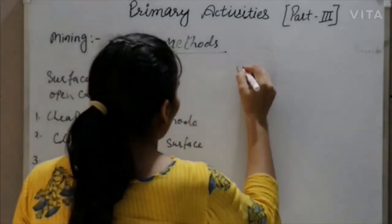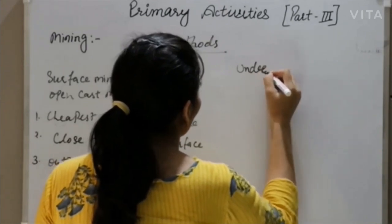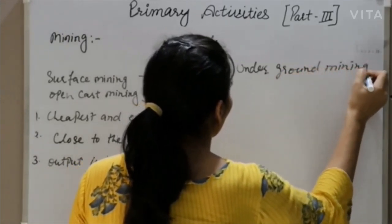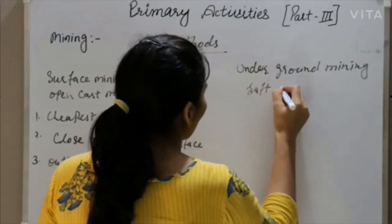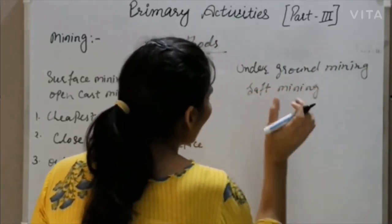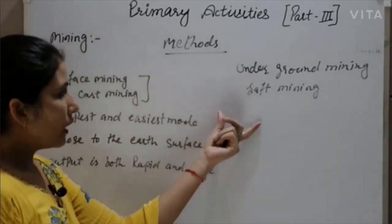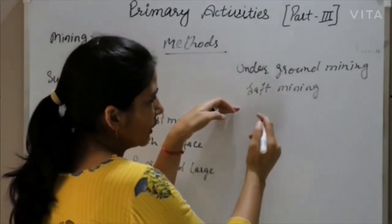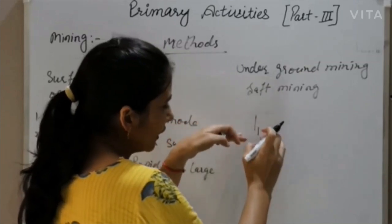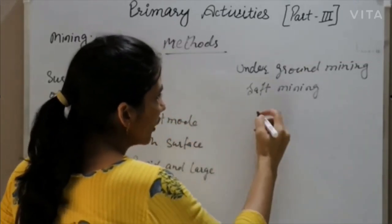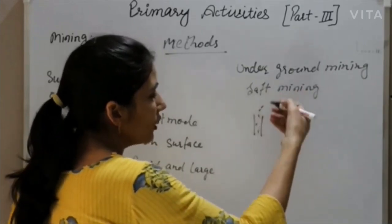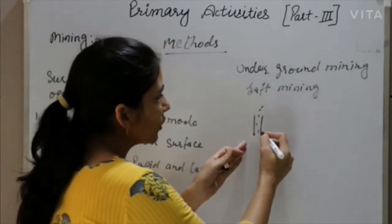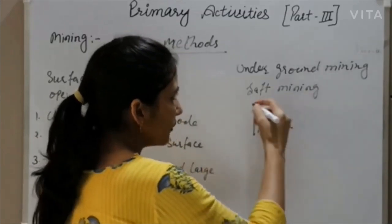Underground mining is known as shaft mining. In this type, metals and minerals are found deeply beneath the surface of the earth. To extract them, we use vertical tunnels called shafts — that is why it is called shaft mining.